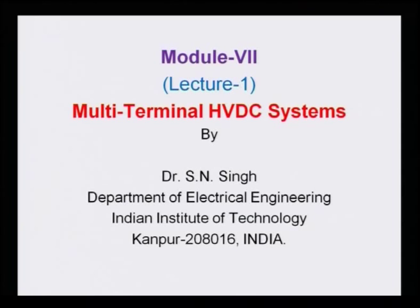This first lecture of Module 7 is dedicated to the multi-terminal HVDC system. So far, we have studied the two-terminal HVDC system, where one station works as a rectifier and another as an inverter at a time. Although the rectifier can work as an inverter and vice versa, we refer to these as two converters. When we have two converters, it is called a two-terminal HVDC link. There is also the possibility of going for more than two terminals.